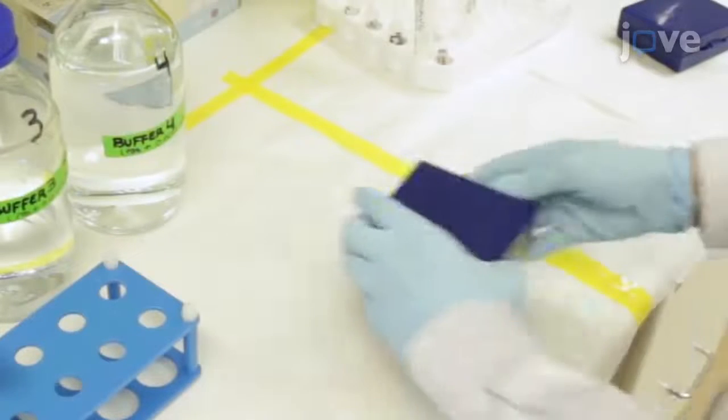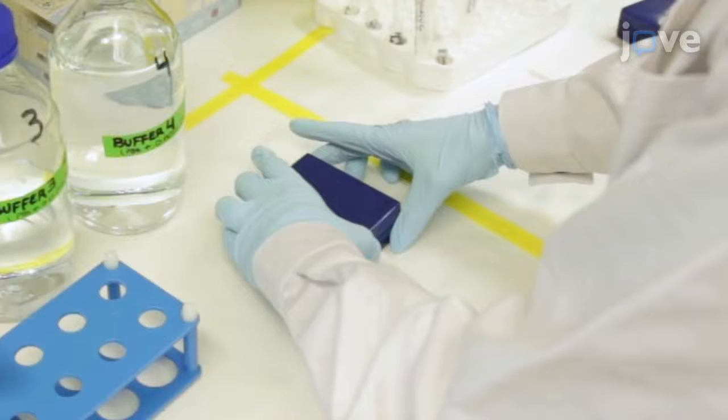To prepare the glycochips and samples, put the storage box with the slides on the table until they reach room temperature.